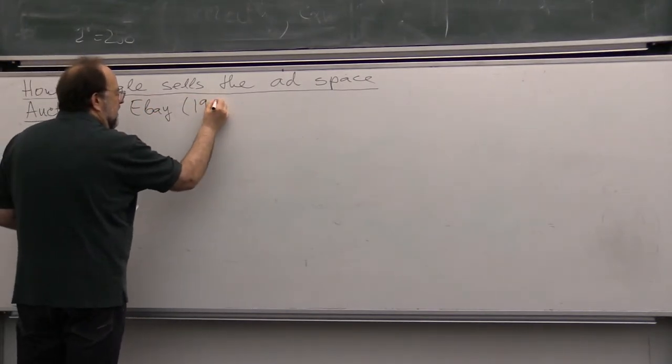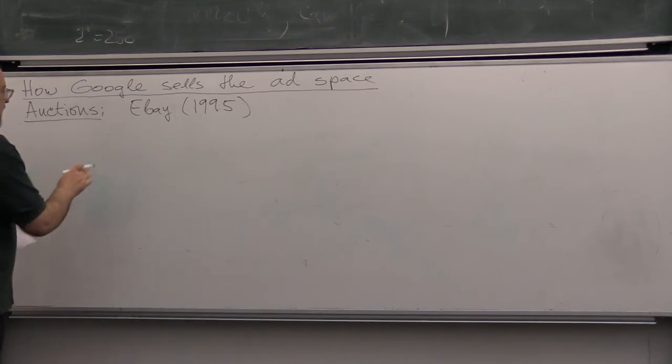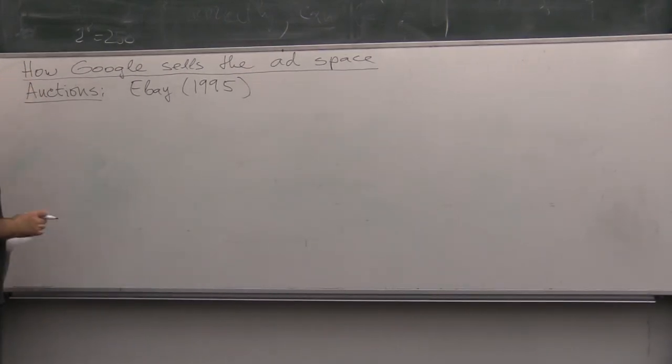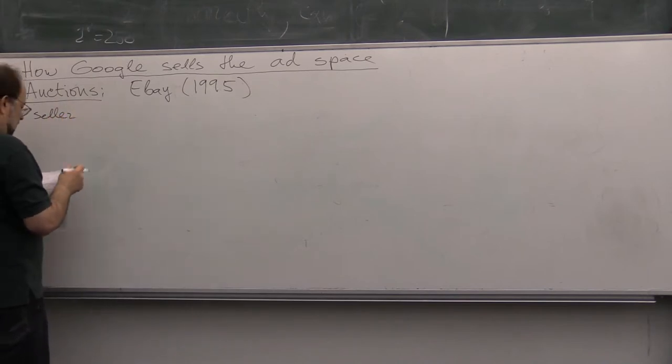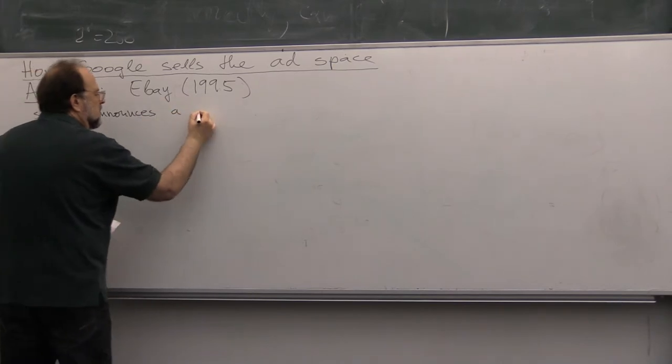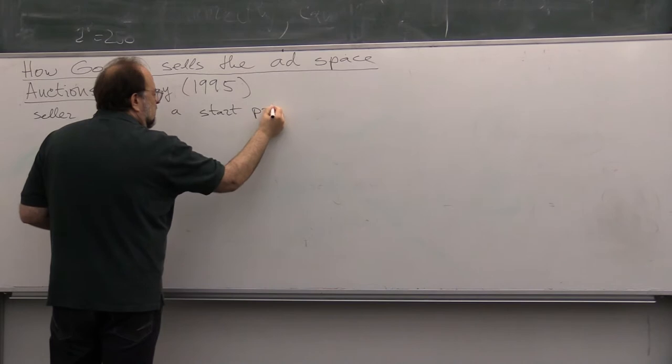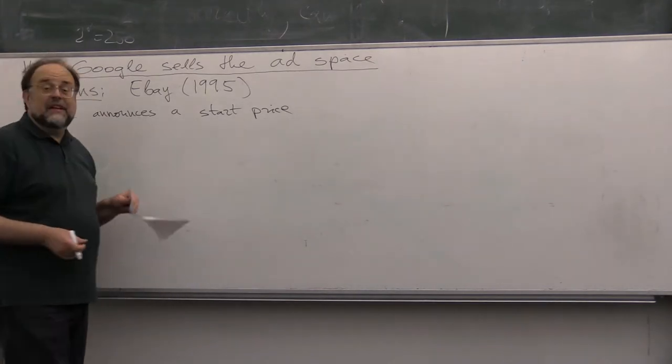And it was started in 1995 and proved to be extremely successful. So, what is the mechanism? First, we will describe how eBay works. So, the seller announces a start price. And in order to make the auction as appealing to as many people as possible, usually this start price is unrealistically low.